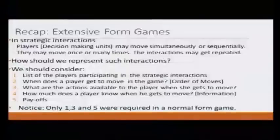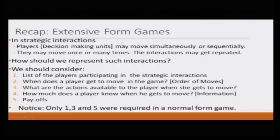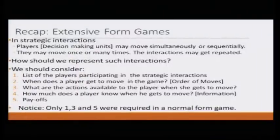We said that in any strategic interaction, we typically need to describe five things: the list of players, when a player gets to move and what their move would be, how much a player knows when they have an opportunity to move, and the payoffs. In a strategic form or normal form game, we model strategic interaction in a reduced form, ignoring the order of moves. But in the extensive form game, we explicitly model these things.